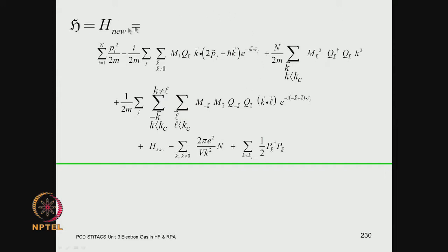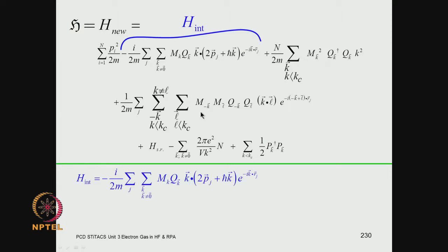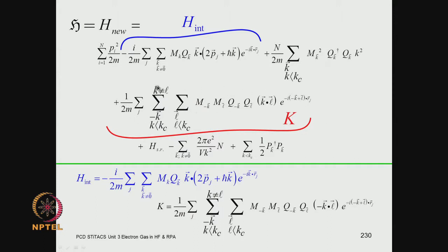In our previous class, we rewrote the transformed Hamiltonian in a certain number of terms. Here, just for the sake of our discussion and bookkeeping, we recognize this already as a kinetic energy term. This is what I will write as a certain interaction — part of the new Hamiltonian under the unitary transformation. We have arrived at a new representation of the Hamiltonian. This term is what we will write as H interaction and this term as K. These are just bookkeeping devices so that we can discuss these terms separately.